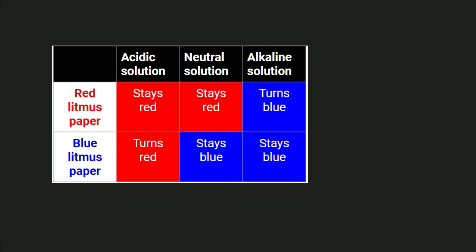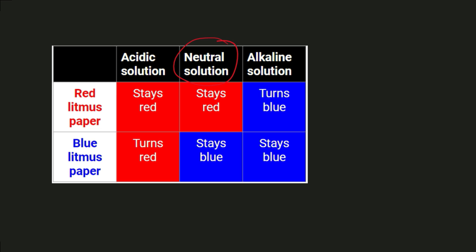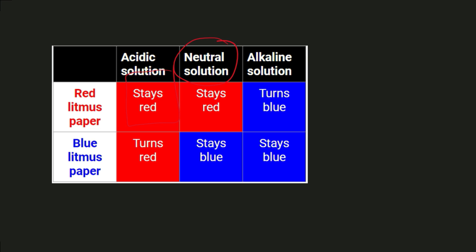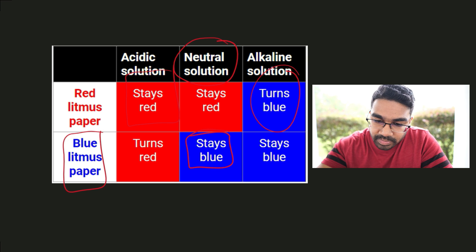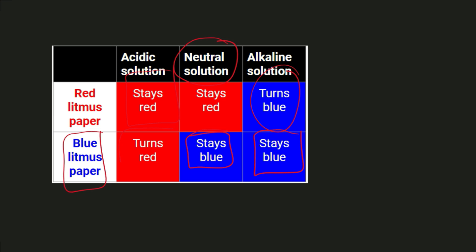Let's look at a more common one used in labs — the litmus paper. We have two types: red litmus paper and blue litmus paper. The red litmus paper is red in neutral solution. If we dip it into an acidic solution, it will stay red — there will be no change. So the red litmus paper is only used to detect alkaline solutions, because in an alkaline solution it turns blue. The blue litmus paper in the neutral state is blue, and in alkaline solution it stays blue. Therefore, the blue litmus paper is used to detect acids — in acids, it turns red.